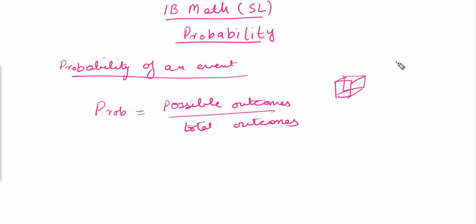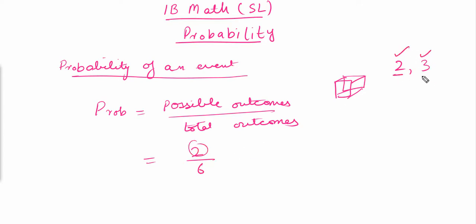The total outcomes for this dice are six, and the possible outcomes — we want number two and three — so the possible outcomes are two. The probability becomes two divided by six. Two and three are the two possible outcomes, and the total outcomes are six, so the answer equals one over three. This is how we work out the probability of any event: possible outcomes divided by total outcomes.